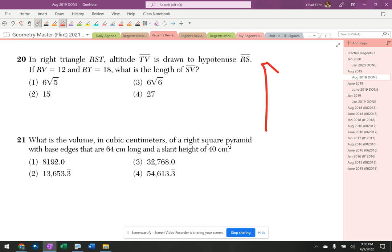But you got right triangle RST - hypotenuse RS. So that means we got altitude TV. The right angle is there. If RV is 12 and RT is 18, what's the length of SV?